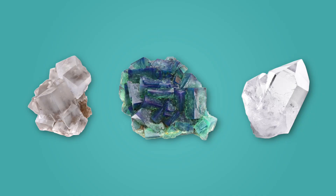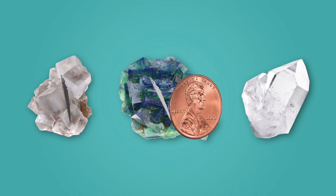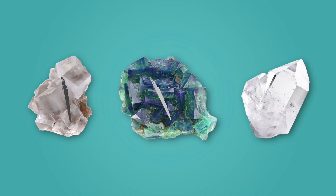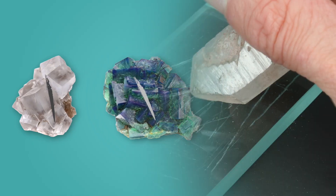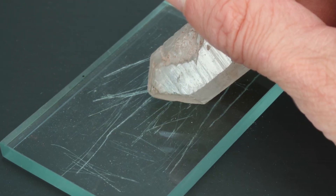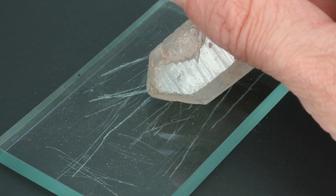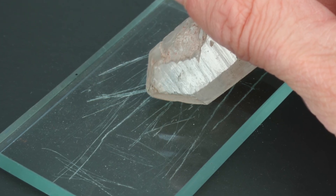Let's test the hardness of these three mystery minerals and see if it gives us enough clues to identify them. If I scratch this first one with my fingernail, it works — my fingernail leaves a mark, which means this mineral is very soft. Now for the next one: my fingernail doesn't scratch it, but a penny sure does. It's harder than the first mineral, but still not very tough. Finally, this mineral doesn't scratch with a fingernail or a penny — it's so hard it can even scratch glass.